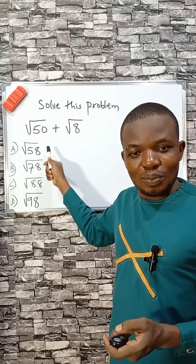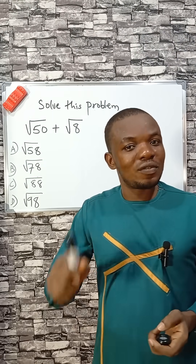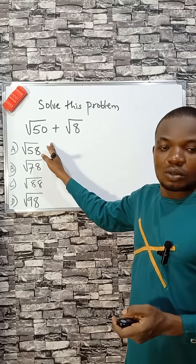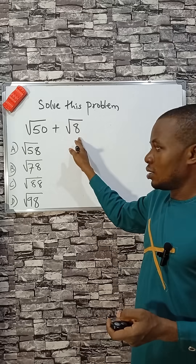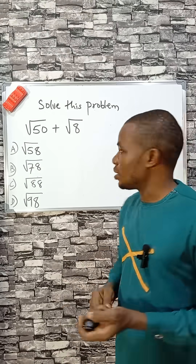This looks simple, but it's tricky — so many students have struggled with this. What is the square root of 50 plus the square root of 8? What if this is correct?